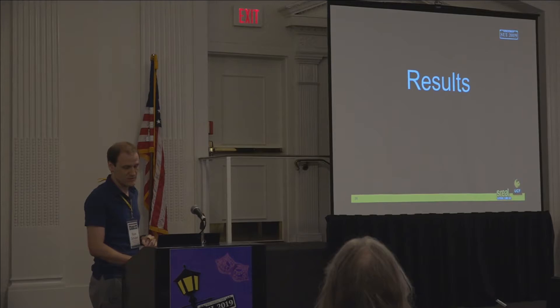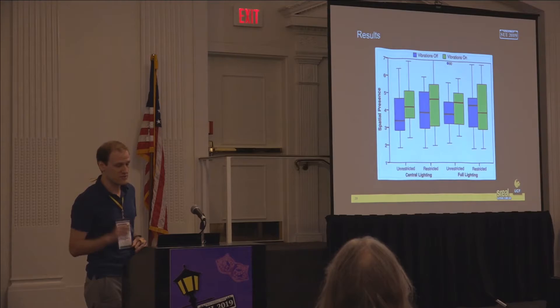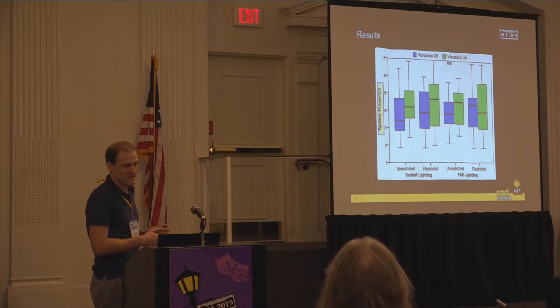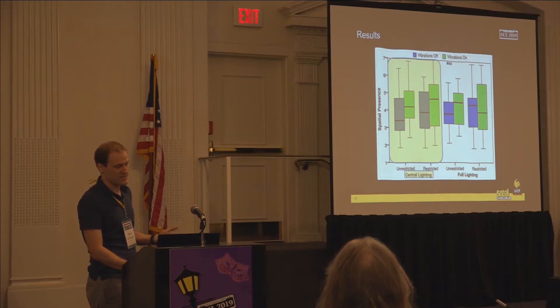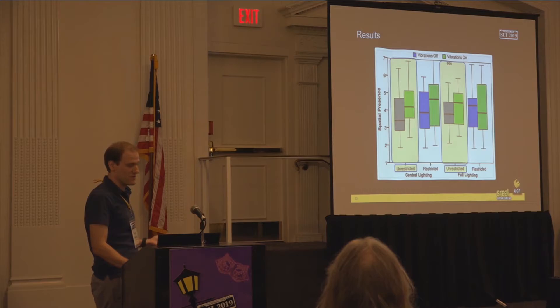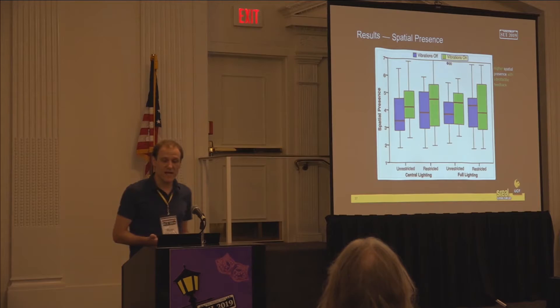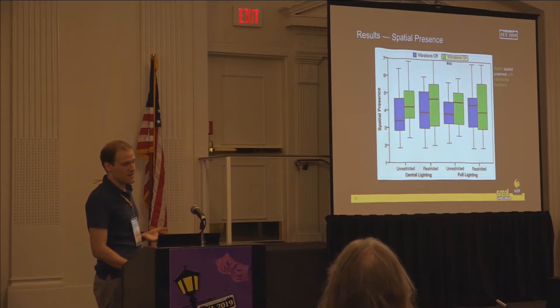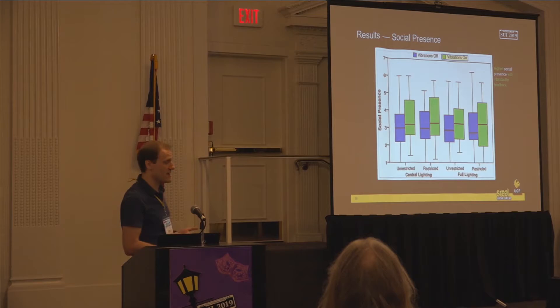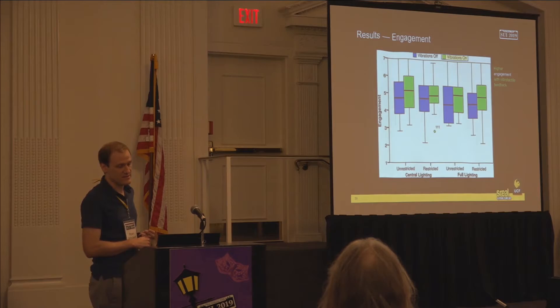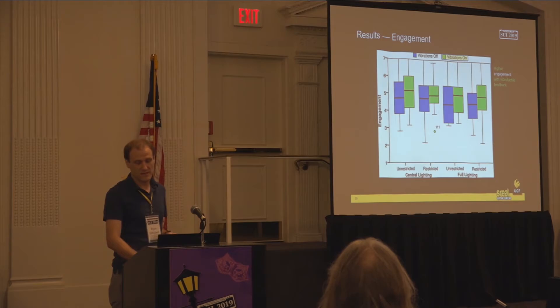Let's talk about some of the interesting results. The y-axis represents the specific subjective questionnaire dimension — here, spatial presence — on a scale from one to seven, divided by all conditions: central versus normal lighting, unrestricted versus restricted field of view, and with or without vibrotactile feedback. With vibrotactile feedback enabled, we saw a significant effect in spatial presence, a significant upward difference in social presence, and a significant increase in engagement. All three were significant effects.